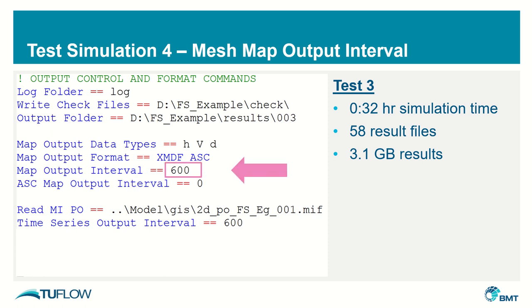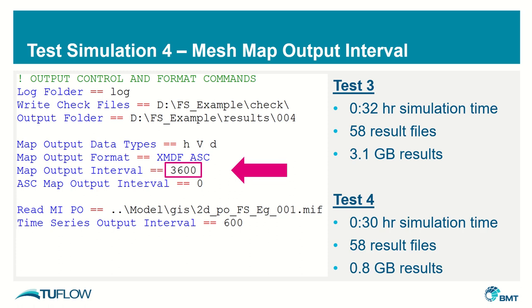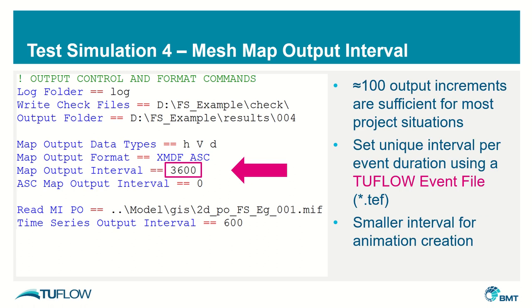The next thing I noticed was that the map output interval was originally specified to 600 seconds, which translates to a lot of results when you're running a model for 140 hours. I've increased that up to 3,600 seconds. Running that model, you can see a further 75% reduction in result folder file size, going from 3.1GB down to 0.8GB. I typically find that approximately 100 output increments is sufficient for most projects.